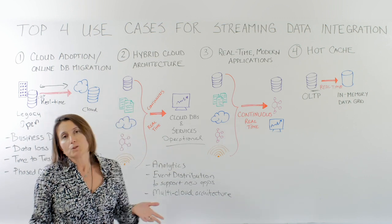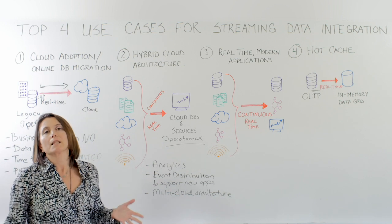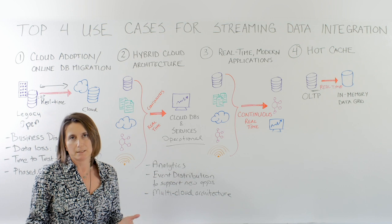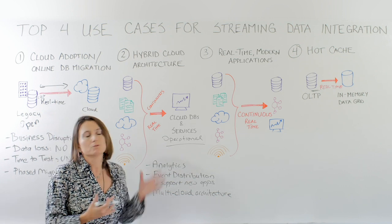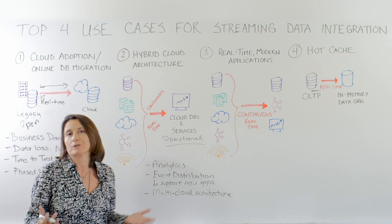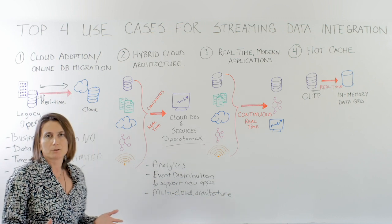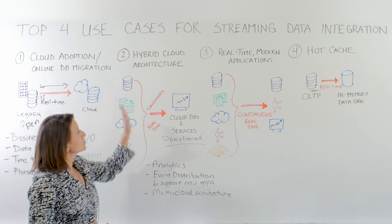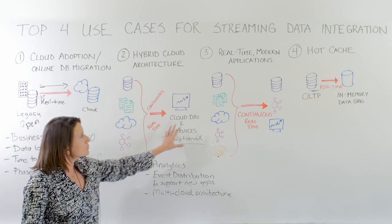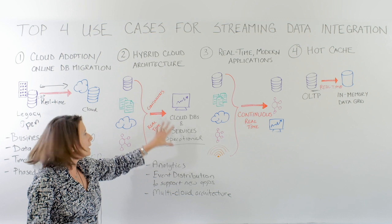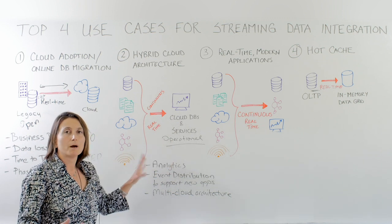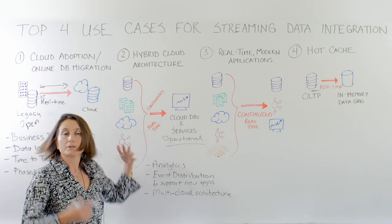A second use case: once you're in the cloud and you have a hybrid cloud architecture, you need to maintain it and connect it with the rest of your enterprise. It needs to be a natural extension of your data center. Continuous real-time data movement with streaming data integration allows you to have your cloud databases and services as part of your data center.